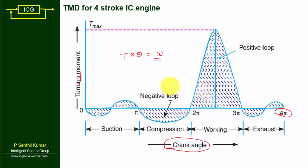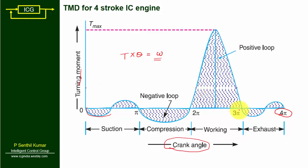During the suction stroke, pressure inside the cylinder is very less compared to atmosphere, so a negative loop is formed. During the compression stroke, work is done on the gas, so again a negative loop is formed. During the power stroke (working stroke), fuel burns and work is done by the gases, so a positive loop is formed. During exhaust, which is very similar to suction, another loop is formed. This is the working of the turning moment diagram of an IC engine.